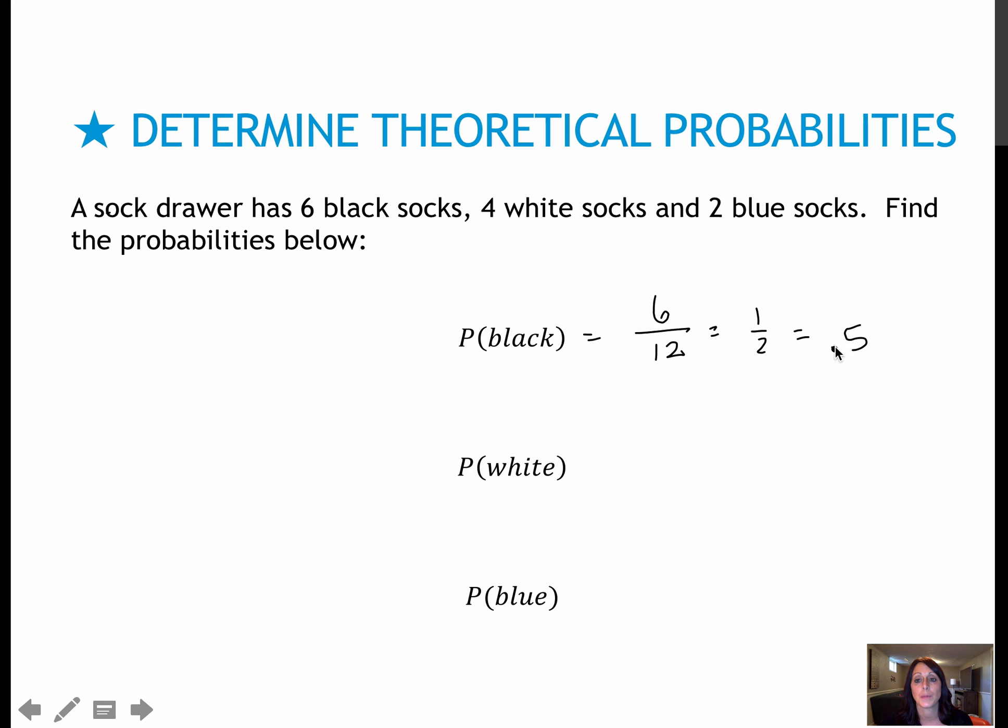I have 4 white socks out of 12. 4 out of 12 is 1 over 3, and that's approximately 0.33, and then 2 blue socks would be 2 out of 12, which is 1 out of 6, and that's approximately 0.167. So if I add all of these together, and again, these two were rounded because they weren't exact answers, but if I add all of these together, notice that the total is 1. What does that tell me? That tells me that I'm 100% sure that I'm going to get either a black or a white or a blue sock.